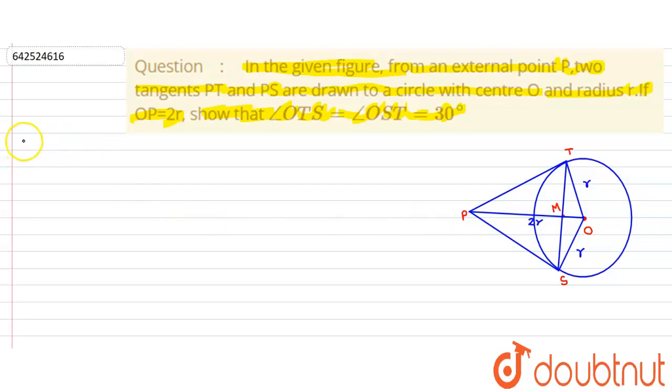Now by theorem, angle PTO equals angle PSO equals 90 degrees.